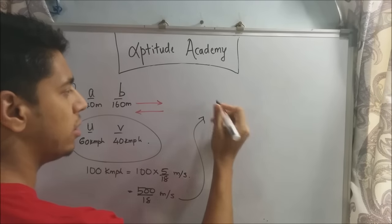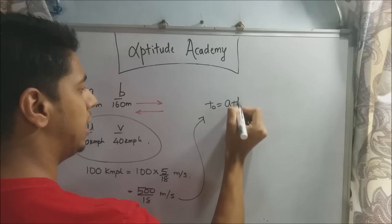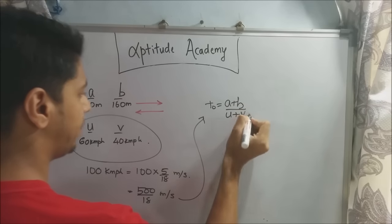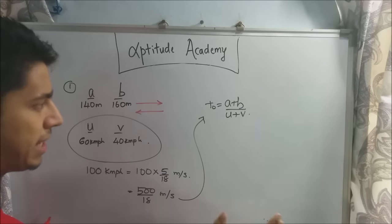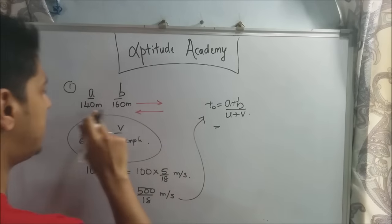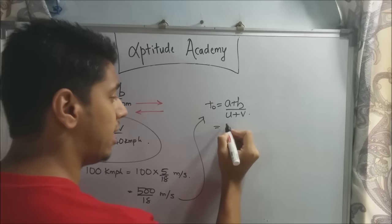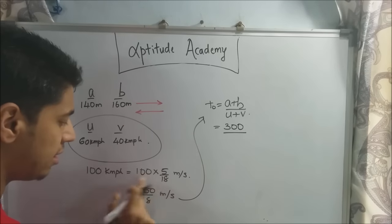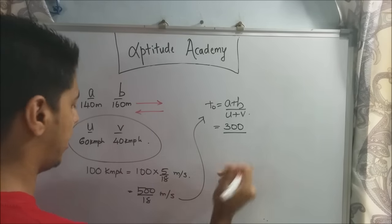Now we can apply it to the formula. So t₀ is equal to a plus b divided by u plus v. Now a plus b is in meters, this is meters per second. Perfect. So a plus b is 140 plus 160, that is equal to 300. And u plus v is 500 by 18 meters per second.